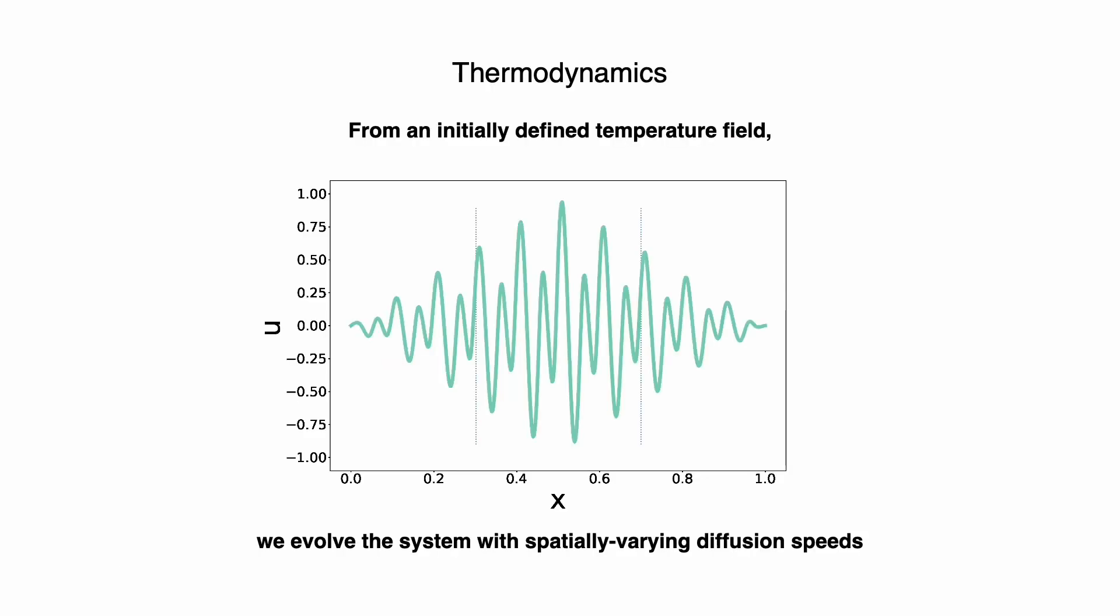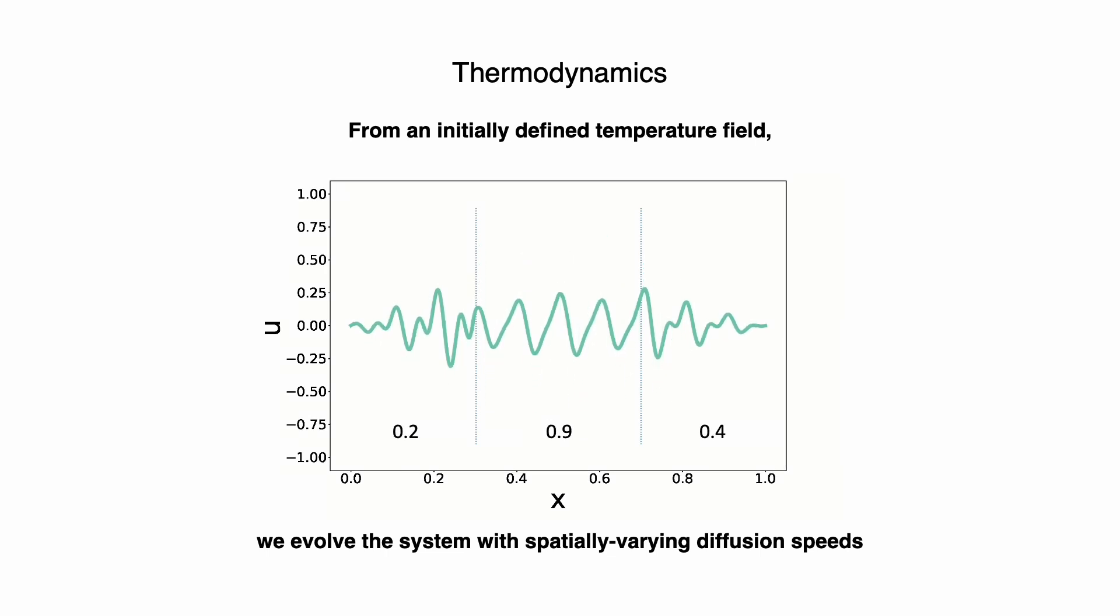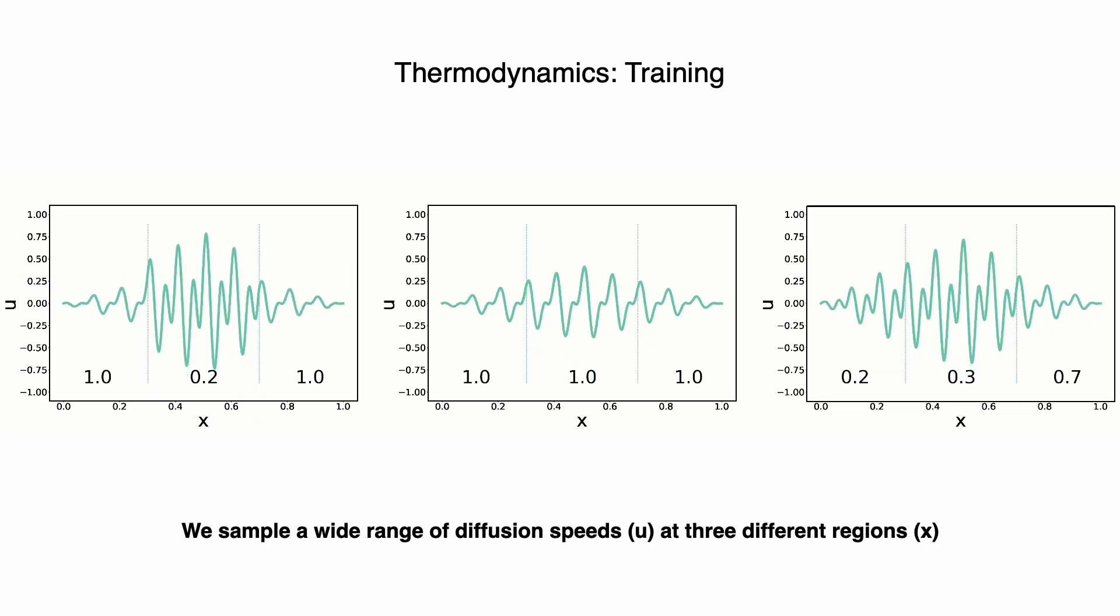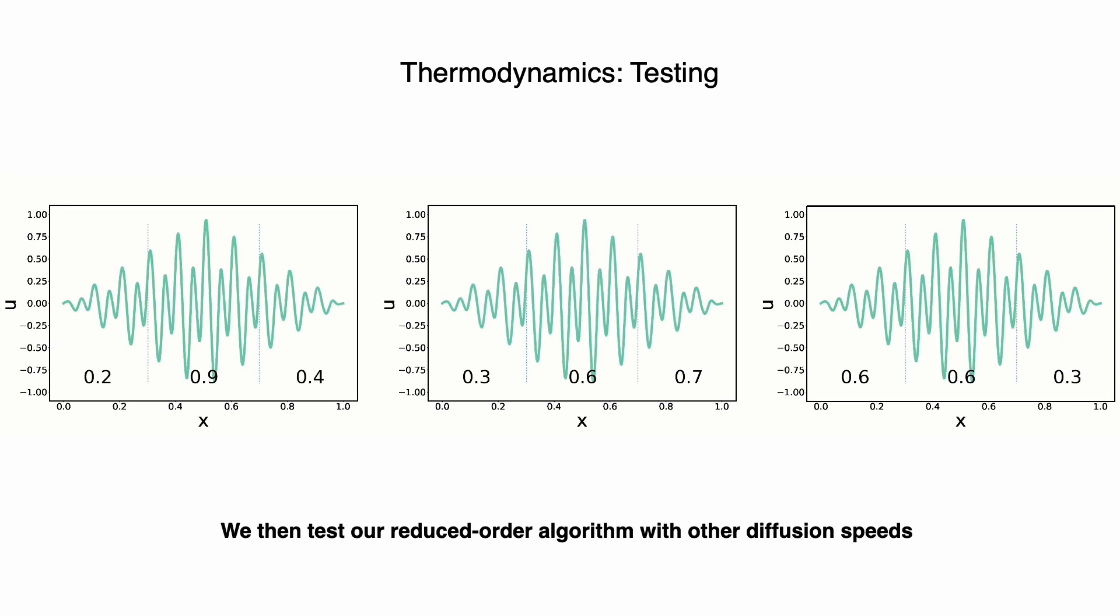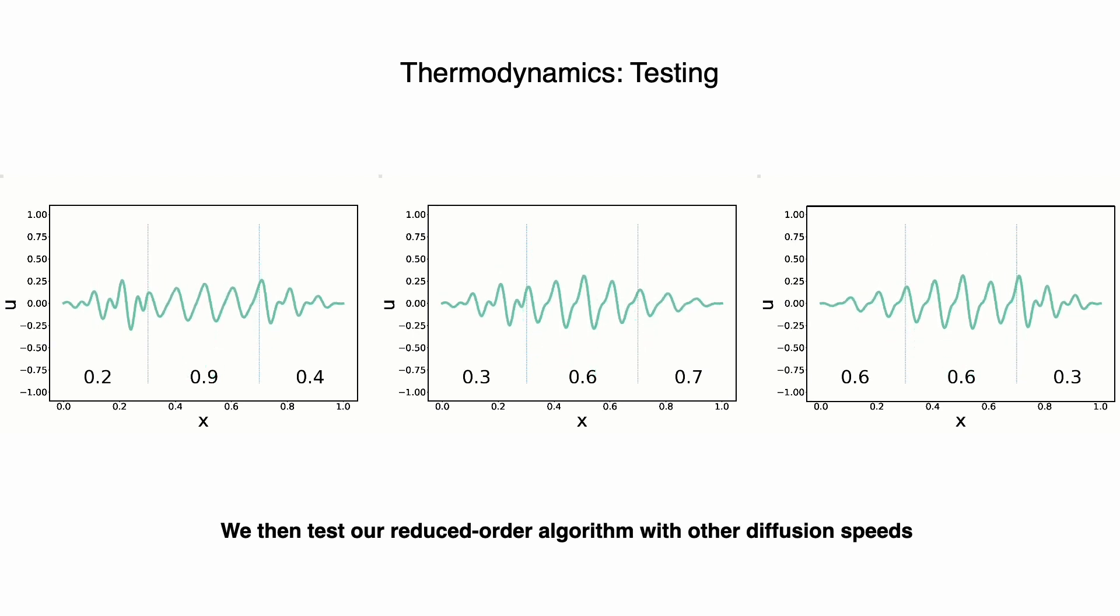To explore this idea, we can start in 1D with an initial temperature field U and evolve it subject to the thermodynamic diffusion PDE using spatially varying diffusion speeds. To train our approach, we generate data exploring a wide range of diffusion speeds taken across three different regions. With the model trained, we then explore new combinations of diffusion speeds in order to test.